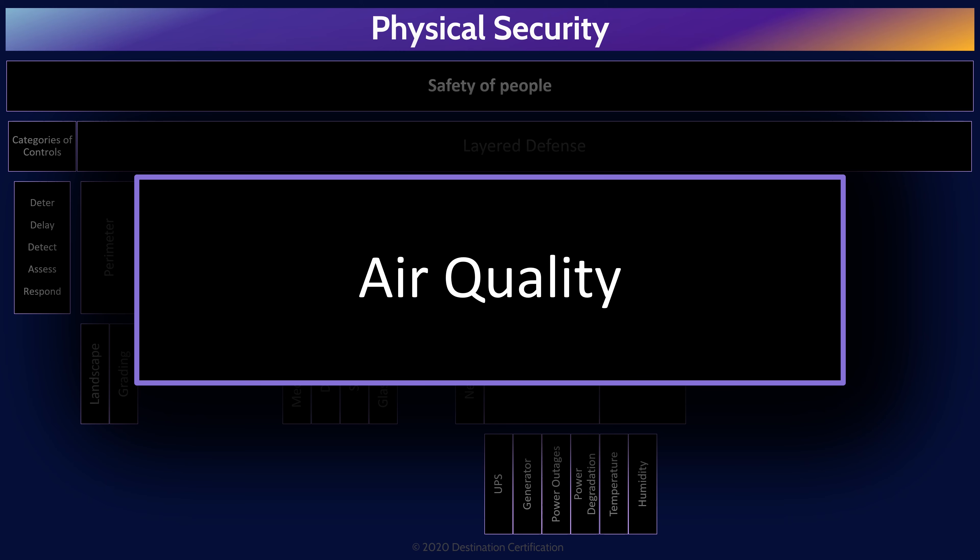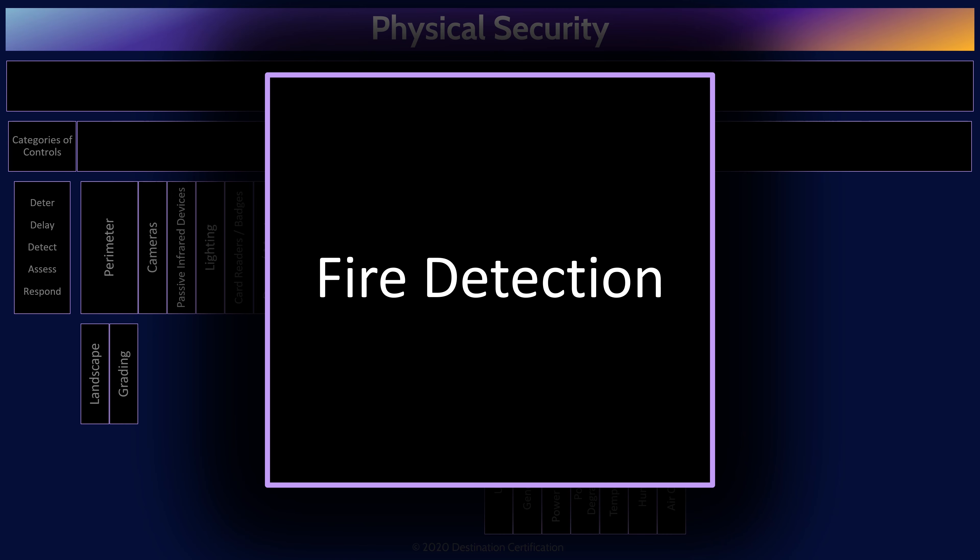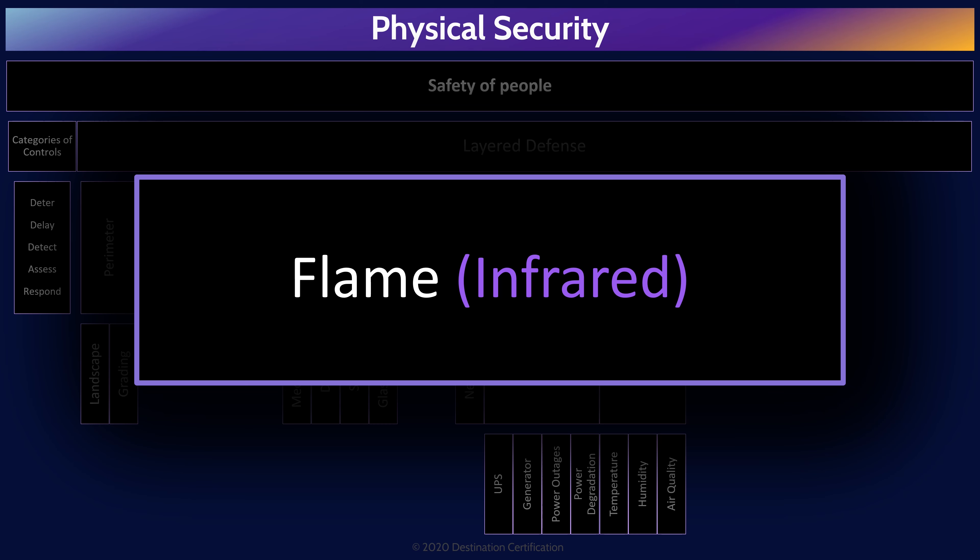Fire is a significant risk, and like any other risk we need to put controls in place to mitigate it. We want a combination of preventive, detective, and corrective controls. The best way to prevent a fire is to limit or eliminate combustible materials. If a fire does occur, you want to detect it as quickly as possible, and as soon as you detect it, correct it as quickly as possible through fire suppression systems.